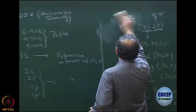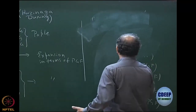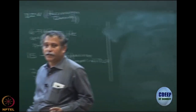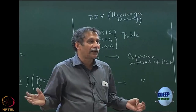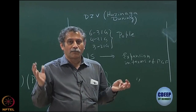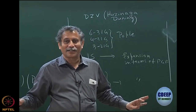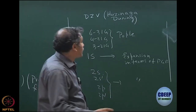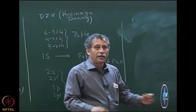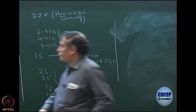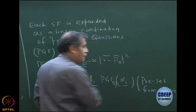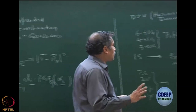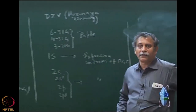The Pople basis set is more commonly used today. In fact, the Huzinaga-Dunning basis set is almost outdated now. Most people use the Pople basis set, especially since the Gaussian program came along. Pople started the Gaussian software, so that is partly why. The Huzinaga gave the primitive Gaussian exponents alpha_i, while Dunning gave the contraction coefficients — but this basis set is almost forgotten today. Everybody now uses 6-31G, 4-31G, etc.